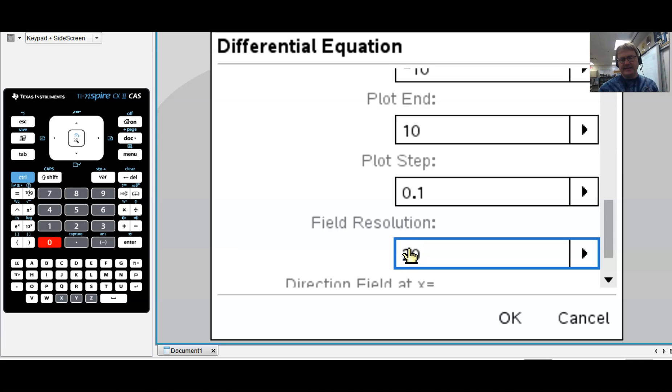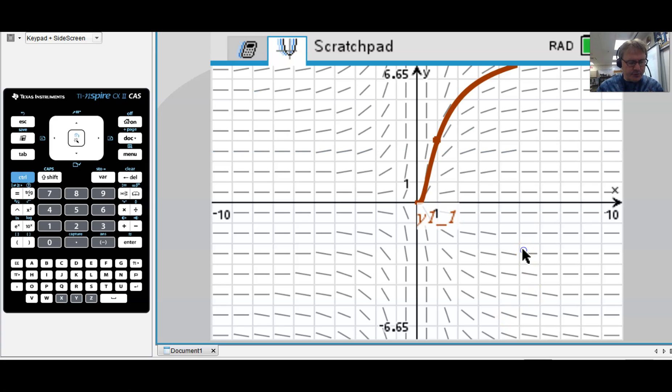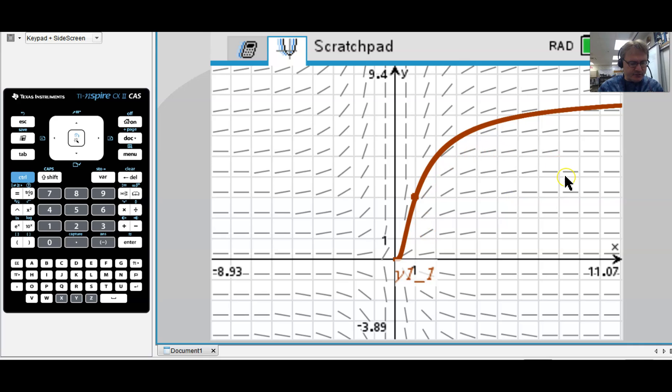The default setting for the field resolution is 14. That means you're going to get 14 little slope segments across the width of the screen. I might up that to say 20 just so that we have a few more to use. I always like to let my plot step be just a bit more precise. I'd like to change it to 1 over 100, which means every 100th of a value in my x, the calculator is producing a value that's going to be on our solution curve. Those are typically the only two settings that I'll change. Let's go ahead and enter and see what we've got here. Boom, there it is. There's our graph that meanders through those slope segments.